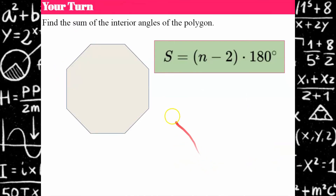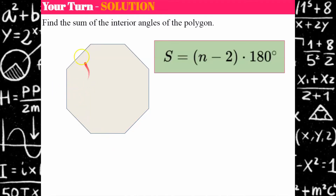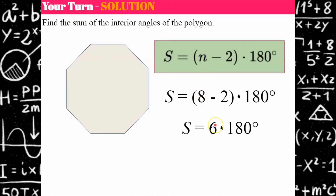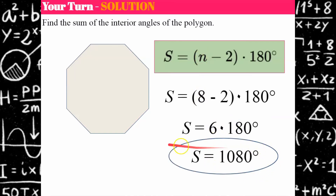Your turn — pause and find the sum of the interior angles of the polygon. Welcome back. Counting the sides, I get eight — an octagon. Replace n with 8: 8 - 2 = 6, times 180 = 1080 degrees. So the sum of all eight interior angles of this octagon is 1080 degrees.